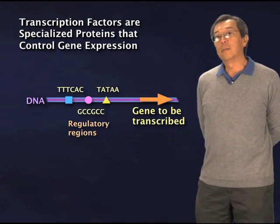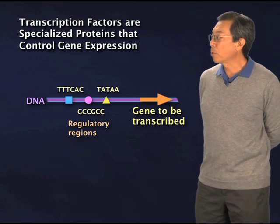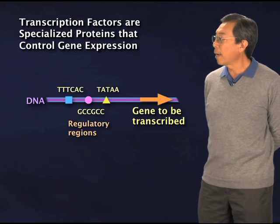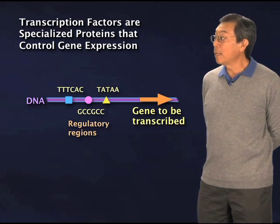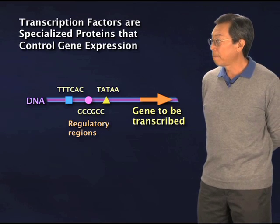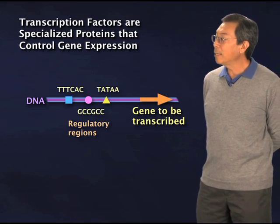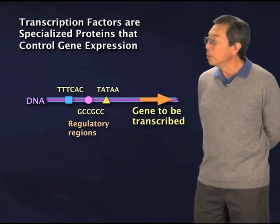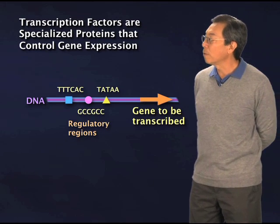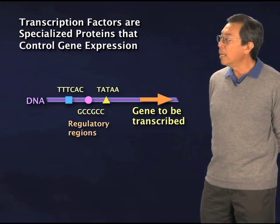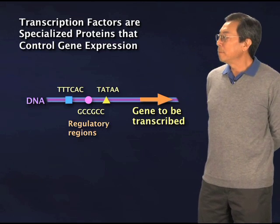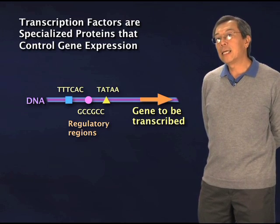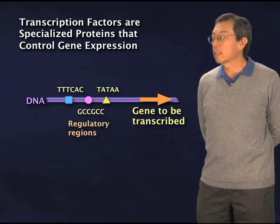Let's go back to the basic unit of gene expression, which is a gene, here shown in the orange arrow, and the non-coding sequences surrounding it. You'll see that I've added a few more elements to this purple DNA — some symbols: a blue square, a round pink circle, and a yellow triangle. Those are a way for me to graphically represent the little bits of DNA sequences that are the regulatory sequences.